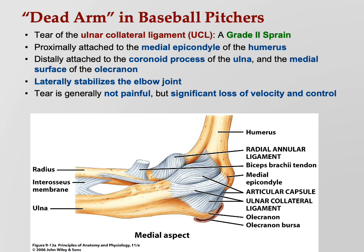The tear is generally not very painful, but you get a significant loss of velocity and control. For many decades it was known that some baseball pitchers who threw very hard would at some point lose speed — dropping from a 98 mph fastball down to 92. Professional hitters can hit 92 but not 98, so when you lose that velocity you become very hittable. Plus, because your elbow wiggles side to side, you lose control and can't find the strike zone anymore.